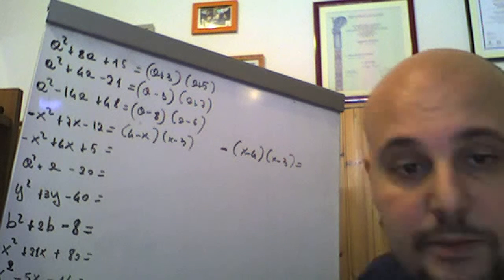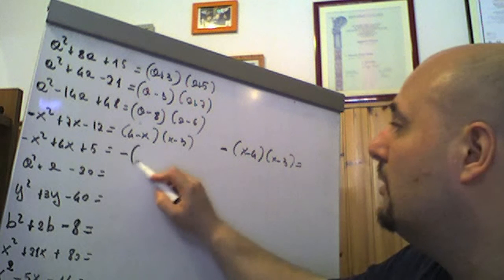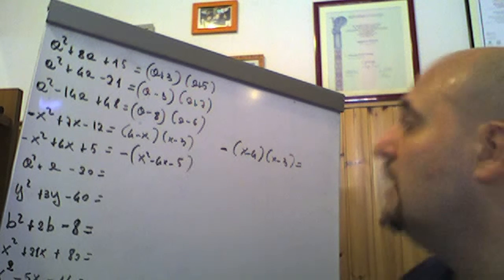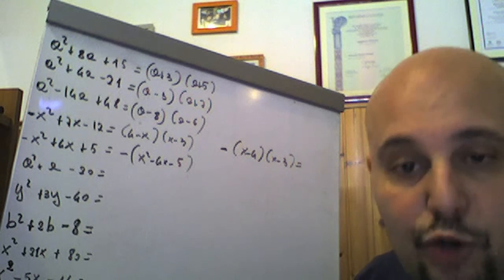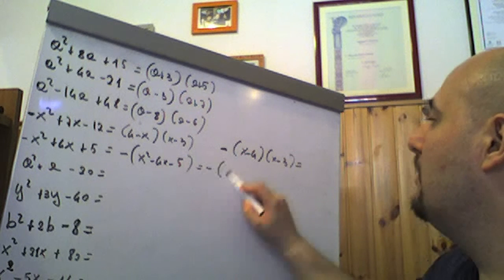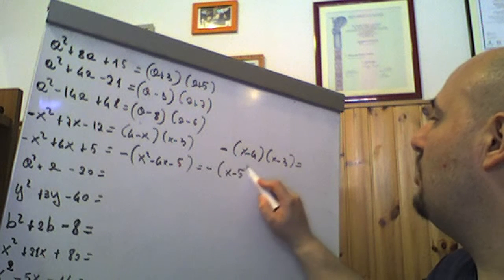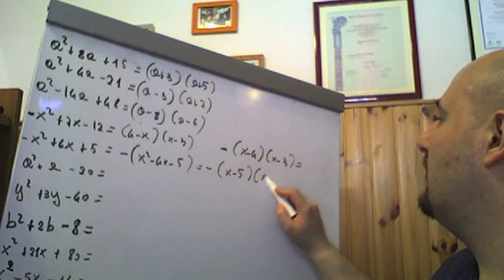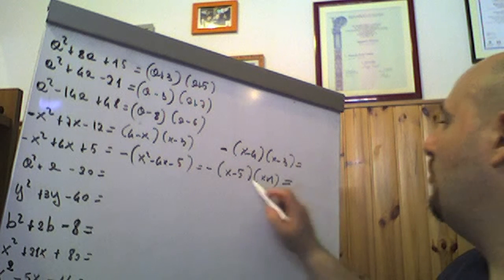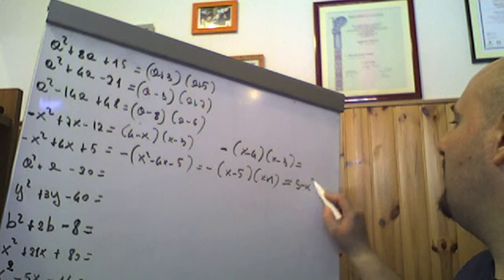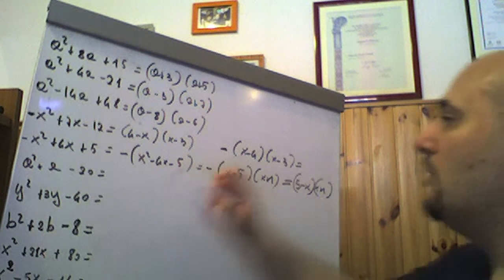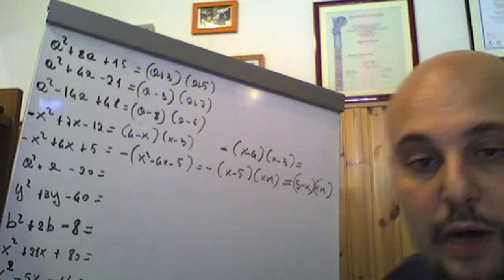−x² + 4x − 5: stesso discorso, raccogliamo un −1 a fattore comune e scriviamo x² − 4x + 5... Correggo: x² − 4x + 5. Notiamo che −5 per +1 è −5, e −5 + 1 = −4. Quindi questo è −(x − 5)(x + 1), e cambiando il segno otteniamo (5 − x)(x + 1).